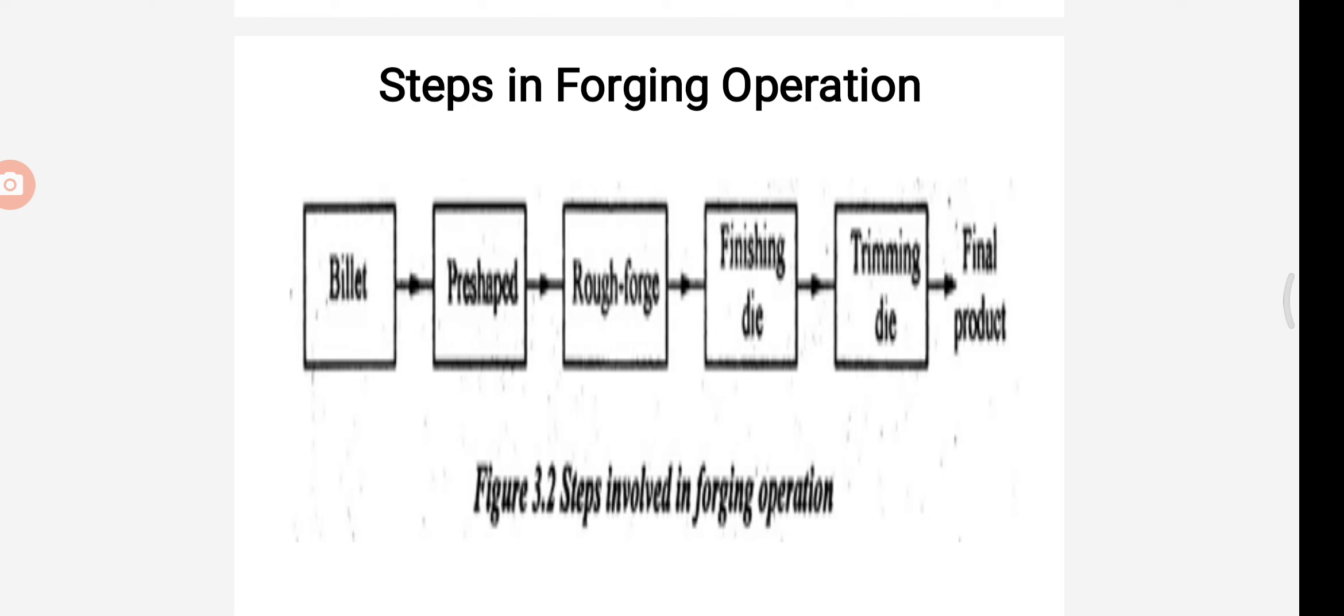Rough forging is the next step in the forging operations. Rough forging operations involves operations such as fullering, edging and blocking operations. Fullering and edging operations are used to distribute the materials into the specific regions of the blank. Blocking creates a rough shape.